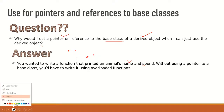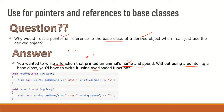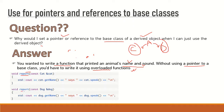The main issue is when you want to write a function that prints an animal's name and sound without using a pointer to the base class. One solution we can consider is using overloaded functions. We have a cat class and a dog class, both inherited from the animal class, and we want to print how a cat or dog is speaking. For that, we can write a function called 'report'.